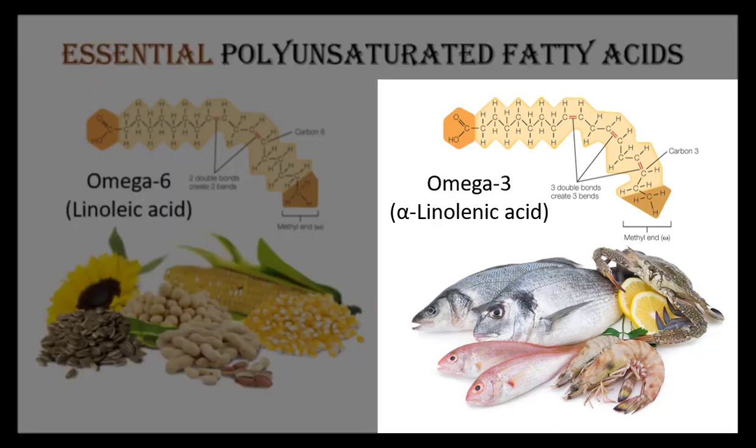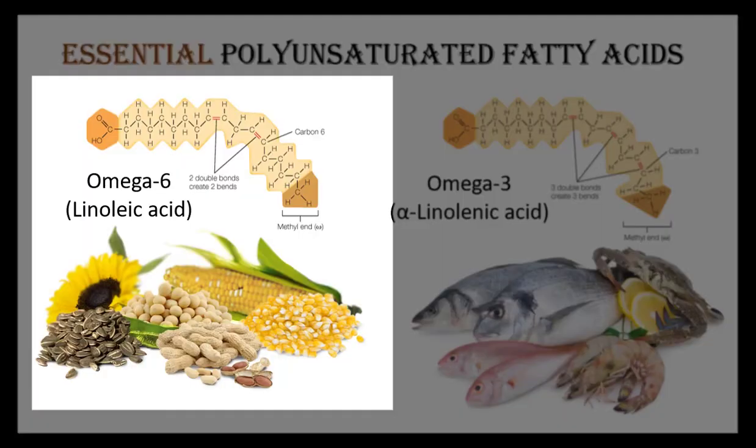Omega-3s are found in fish, especially salmon, anchovies, halibut, and sardines, as well as some nuts (especially walnuts), some shellfish (especially mussels, oysters, and crab), and flax seeds. Omega-6s are found in soybeans, corn, safflower oil, sunflower oil, and lots of different nuts and seeds.